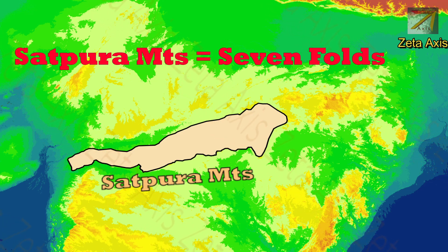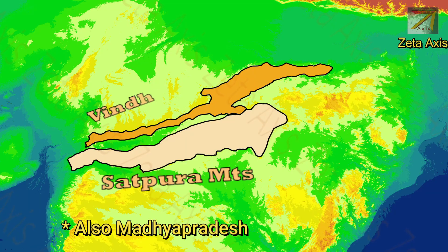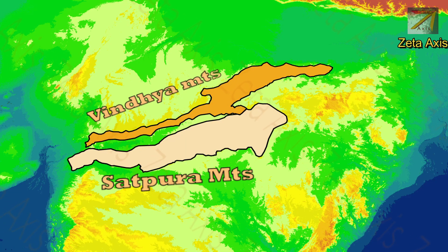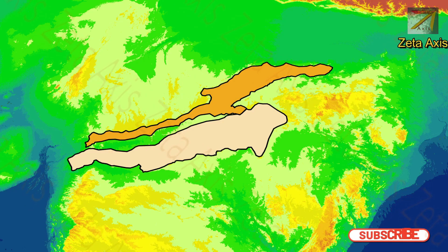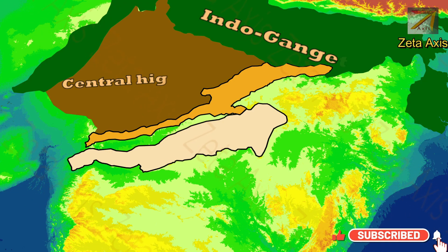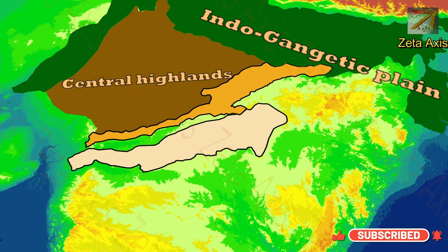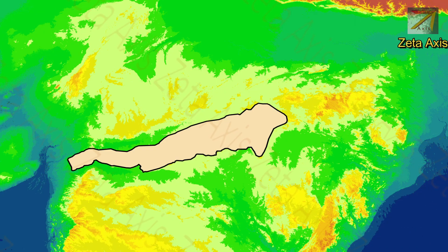The Satpura mountains run parallel to Vindhya mountains located just north of Satpura mountains. The Vindhya and Satpura ranges divide the Indian subcontinent into two parts: the northern region having Indo-Gangetic plains, while the southern region is formed by the Deccan Plateau.